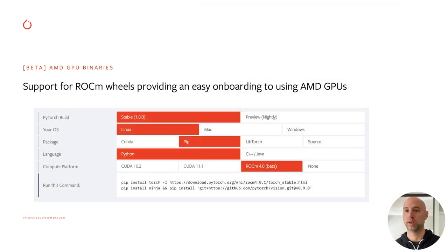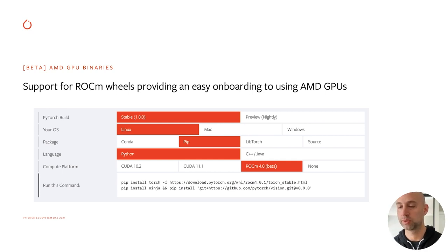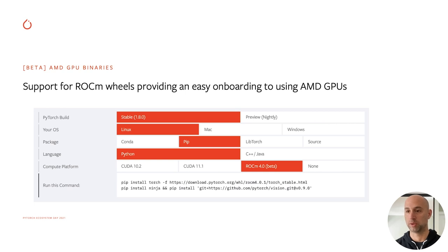The last thing I'll mention is beta support for AMD GPUs, which we've been working on for quite some time with the AMD team. This is now in the install matrix — you can go to PyTorch.org, click on ROCm, and we support ROCm 4.0.1. These are programmatically available through pip, so you can basically get AMD GPUs out of the box. Again, this is a beta, so we'd love to get feedback and let us know what you think. We'll continue to work with the AMD team to improve support.